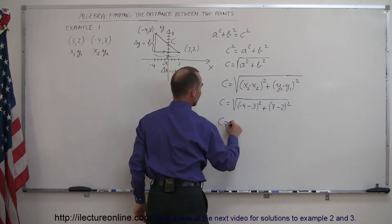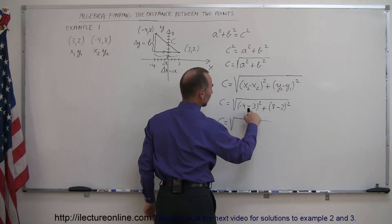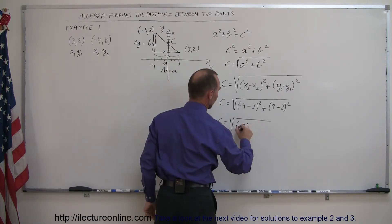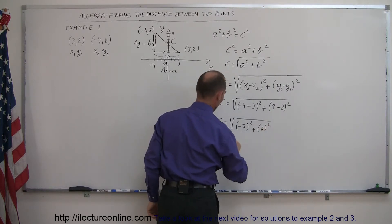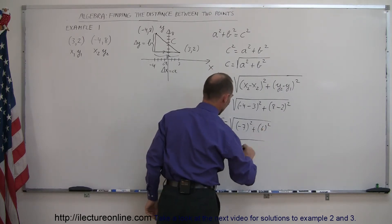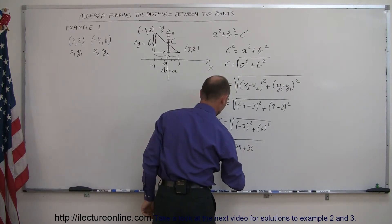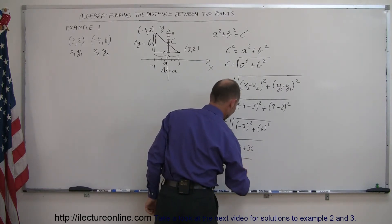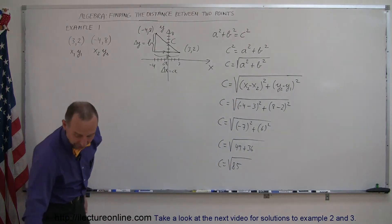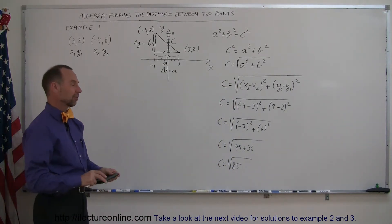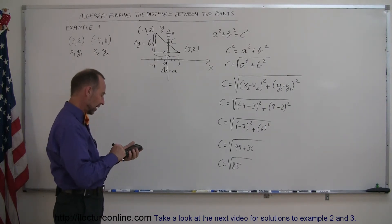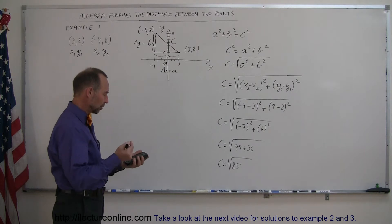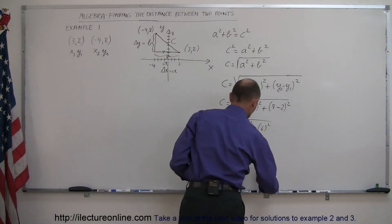So we get C equal to the square root of (minus 4 minus 3) squared plus (8 minus 2) squared, which is the square root of (minus 7) squared plus 6 squared, giving us the square root of 49 plus 36, which equals the square root of 85. If you want the decimal equivalent, the square root of 85 is approximately 9.22. That is the distance between the two points.